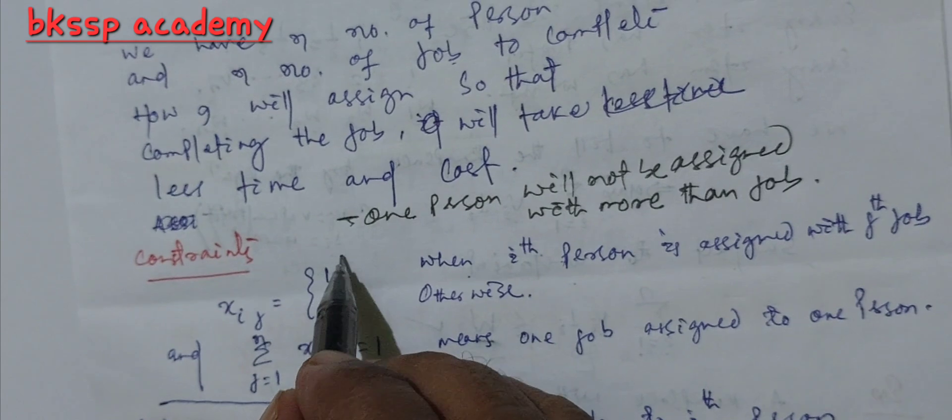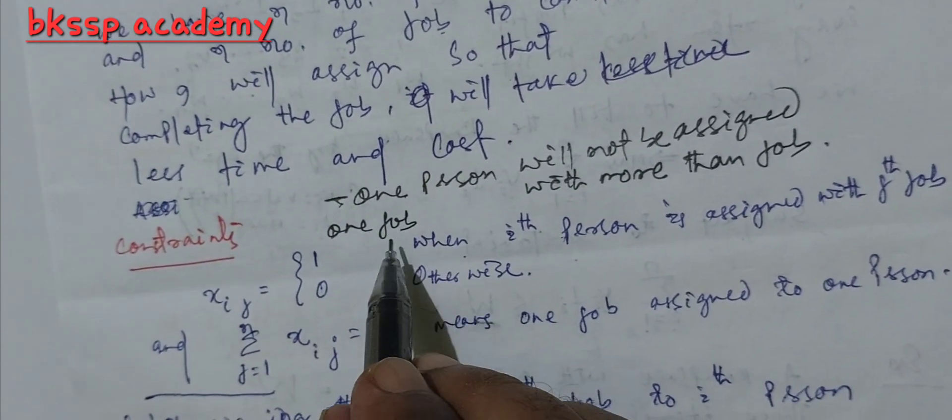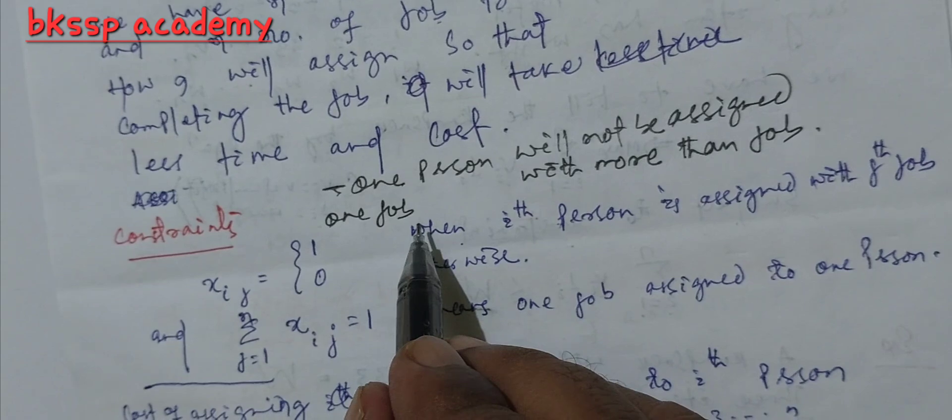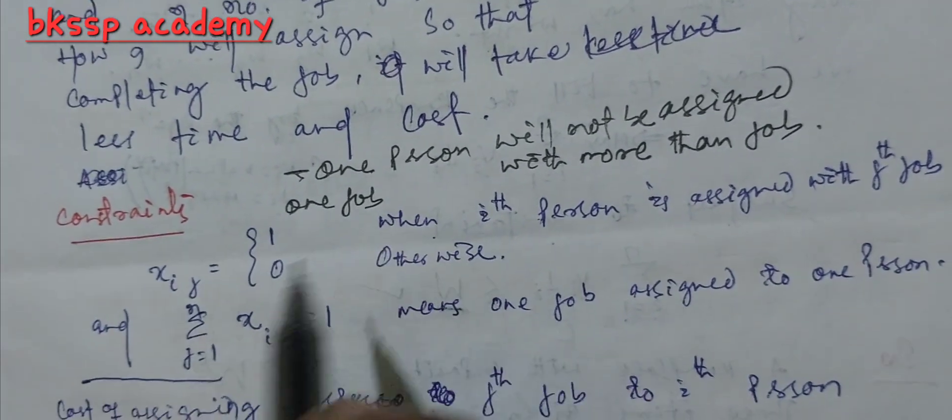Another constraint is one job will not be assigned to more than one person.